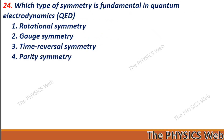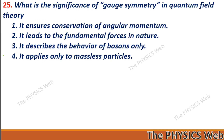Next: which type of symmetry is fundamental in quantum electrodynamics? It is gauge symmetry. So, two is your correct option. Next, question twenty-five: what is the significance of gauge symmetry in quantum field theory? It leads to the fundamental forces in nature. So, two is your correct option.